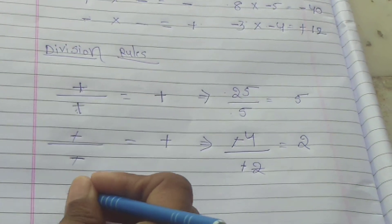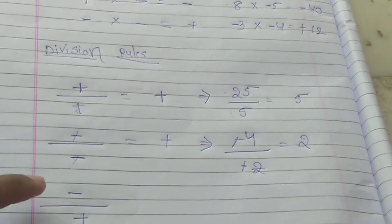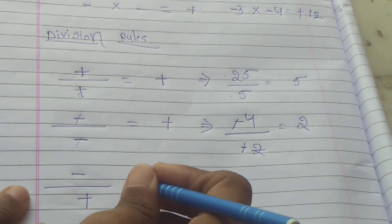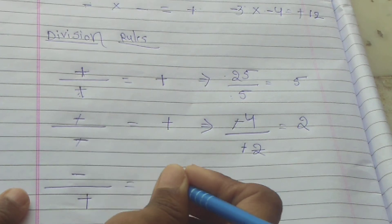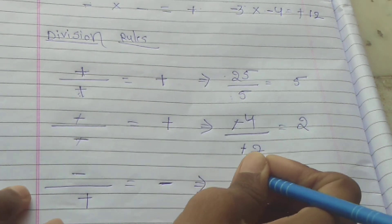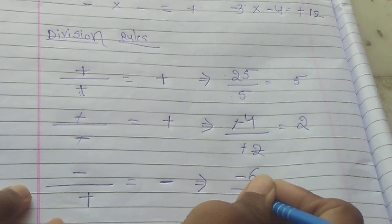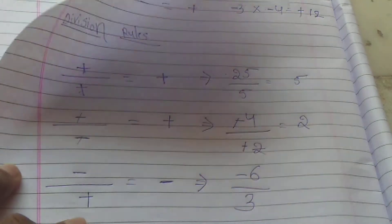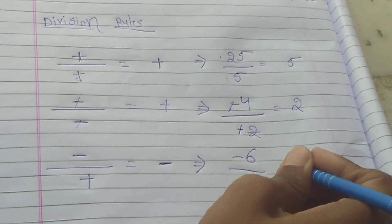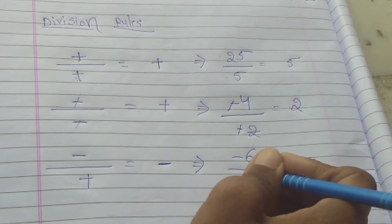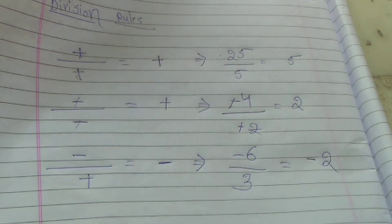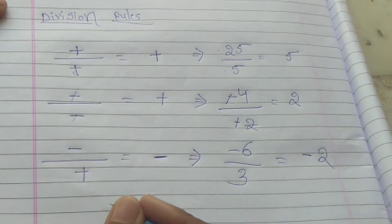Next: minus divided by plus. If the numerator has a minus number and the denominator is plus, the answer is minus. For example, minus 6 divided by 3: minus divided by plus gives minus, so the answer is minus 2.